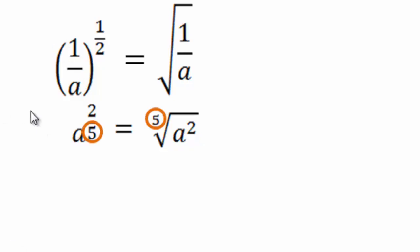Denominator. So when you have a fractional exponent, the denominator is the index, and a squared is what goes inside as a radicand. a squared is a radicand and five is the index.